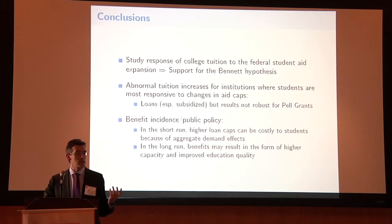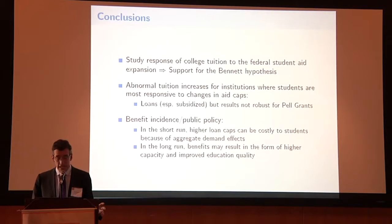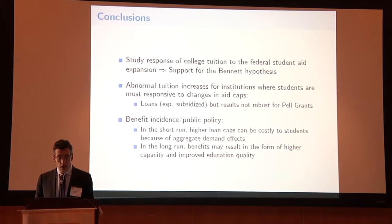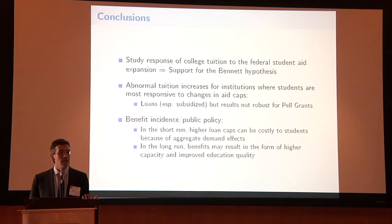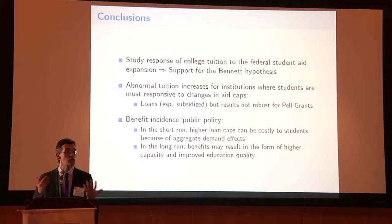In conclusion, we study the response of tuition to federal student aid and find evidence supporting the Bennett hypothesis around the policy changes observed over the past few years. There are abnormal tuition increases for universities where the student population is most likely to receive this form of aid, with effects particularly strong for subsidized loans. In terms of benefit incidence, in the short run we see a detrimental effect of the aid increase — especially for the loan program — where the average student's increased borrowing capacity is essentially appropriated by the university. In the long run, however, the benefits may differ, and enrollment increases could be important policy goals.